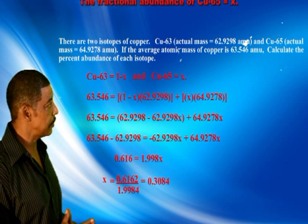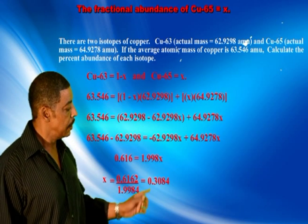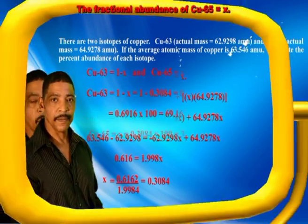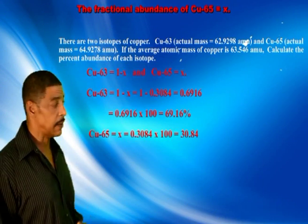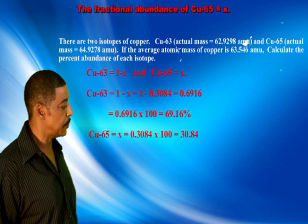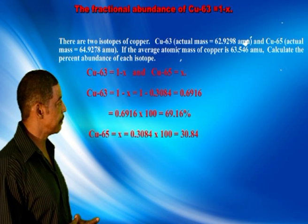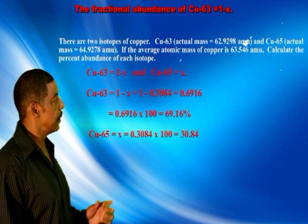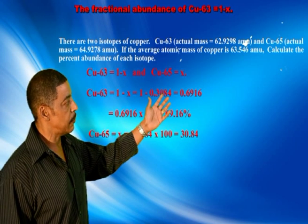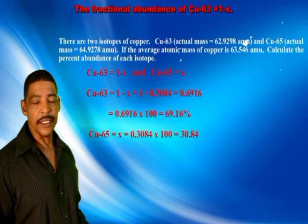Therefore, the fractional abundance of copper-65 is equal to 0.3084. The fractional abundance of copper-63 is equal to 1 minus x, where x equals 0.3084. This is equal to 1 minus 0.3084, which equals 0.6916.